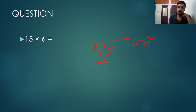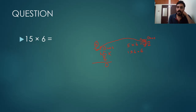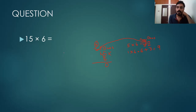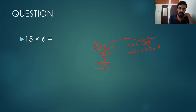Next, we multiply 1 and 6. If you remember, 1 times 6 is 6. And we have the carry over 3, so we add 6 plus 3, which is 9. We write 9 here. So the answer is 90 — 15 multiplied by 6 gives us 90.